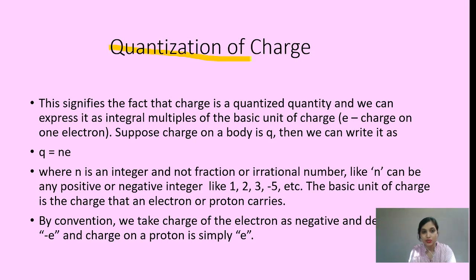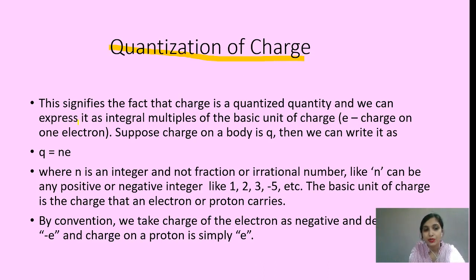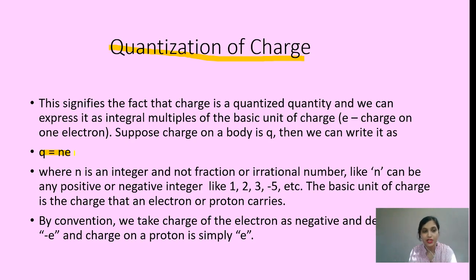Next, we do quantization of charge. Quantization of charge means that when charge is transferred, the form of charge follows the formula q equals ne. Here n is an integer, and e is the basic unit of charge — 1.6 into 10 to the power minus 19 coulomb. Charge will always be transferred in this form. This signifies that charge is a quantized quantity, and we can express it as an integral multiple of the basic unit of charge.